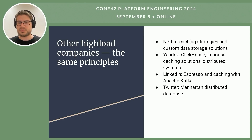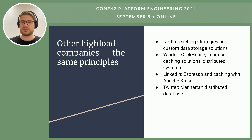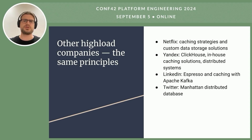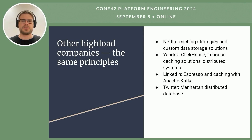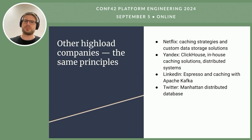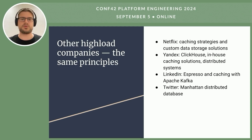LinkedIn implements a distributed storage system called Espresso for its real-time data needs and leverages caching with Apache Kafka to manage high-throughput messaging. Twitter employs a custom-built storage solution called Manhattan, designed to handle large volumes of tweets and user data — the same kinds of decisions seen across all these companies.